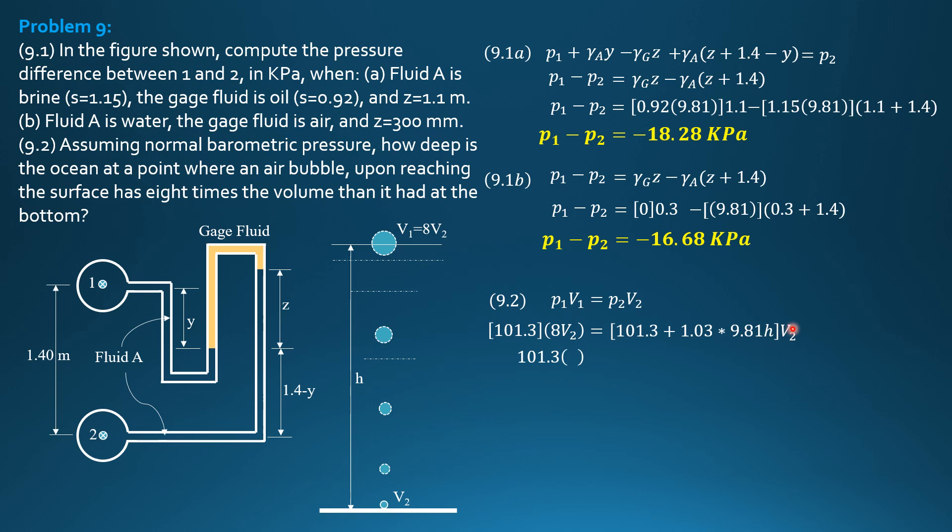We can cancel V2. 101.3 times 8 equals 101.3 plus 1.03 times 9.81 times H. So, when only H is unknown here, then we can solve for H, 70.18 meters.